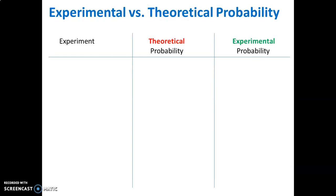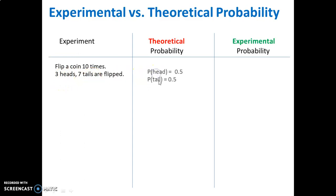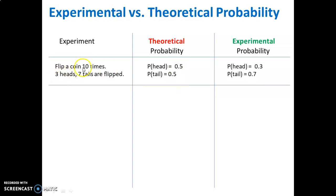Looking at experimental versus theoretical probability: we run a small experiment and flip a coin ten times, so we have ten trials. Heads comes up three times, tails comes up seven times. In theory, the probability of getting a head is 0.5 and the probability of getting a tail is 0.5 — a 50-50 chance. However, in our small experiment, since we have three heads out of ten, the probability of a head is 0.3, and seven out of ten tails gives a probability of 0.7.